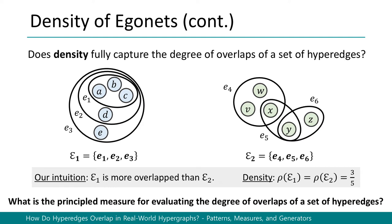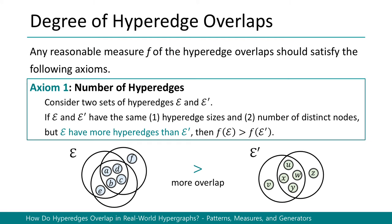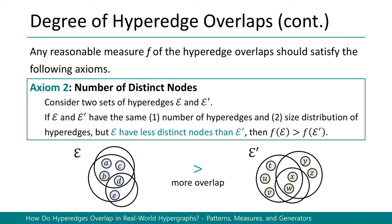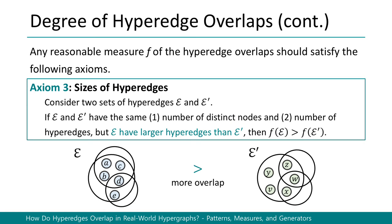Consider two sets of hyper-edges: intuitively, the left one is overlapped more substantially than the right one, but the densities of both sets are the same since they have the same number of nodes and the same number of hyper-edges. To address this issue, we present three axioms that any reasonable measure of hyper-edge overlaps should satisfy. First, given the same sized hyper-edges and same number of nodes, one with more hyper-edges overlaps more. Second, given the same number of hyper-edges and same hyper-edge size distributions, the one with fewer distinct nodes overlaps more. Finally, given the same number of nodes and same number of hyper-edges, the one with larger hyper-edges overlaps more.